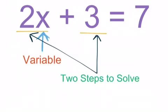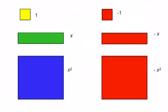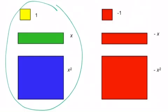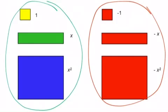We're going to solve for x and practice modeling these, giving us a good visual representation of what's going on. We'll have these algebra tiles. The left ones represent positive values: 1, x, and x squared. The right ones will be the negative ones — red usually meaning negative — so negative 1, negative x, and negative x squared. We won't worry much about x squared and negative x squared, but it's good information to have for future reference.